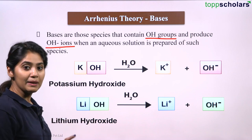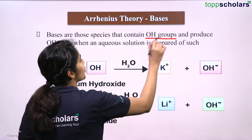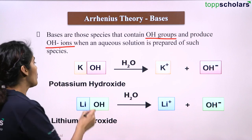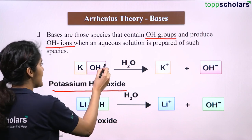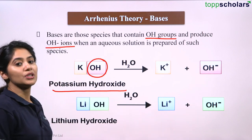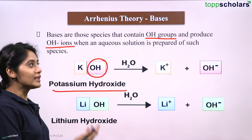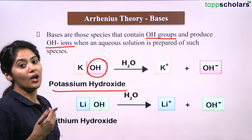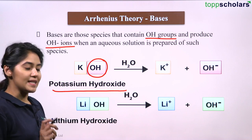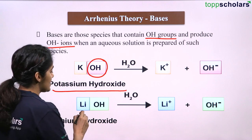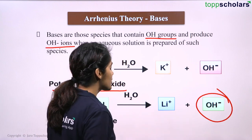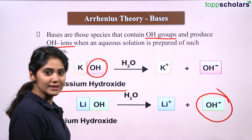As per Arrhenius theory of bases, the OH group is present and it will dissociate to release OH- ions. For example, potassium hydroxide, KOH, has an OH group and in water dissociates into K+ and OH-. So the solution will have more OH- ions. Similarly, lithium hydroxide, LiOH, in water increases OH- ions by dissociating into Li+ and hydroxide ion.